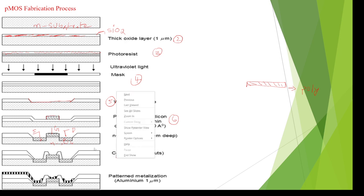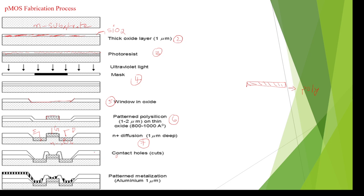In the eighth step, to give protection for the surface, the total surface is again covered with a silicon dioxide layer — the oxidation process. Then the total surface is covered with metal to give connections to other devices.